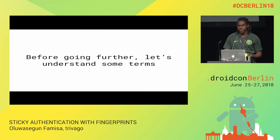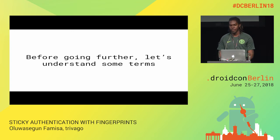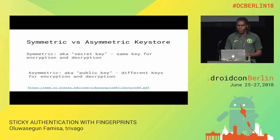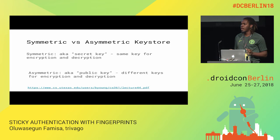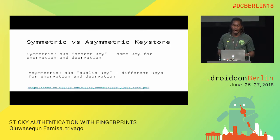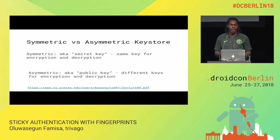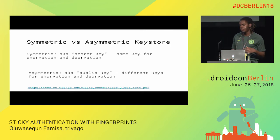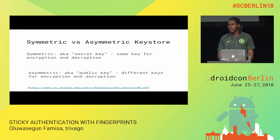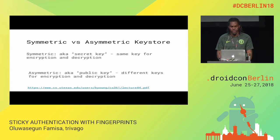Before we go further, let me quickly run through some concepts. First is the concept of keys and key stores — there are symmetric and asymmetric ones. The symmetric key, loosely speaking, is like a secret key — the same key you use for encryption is the same one you use for decryption. The asymmetric key, on the other hand, means there is a pair of keys — a public one and a private one — and both of them solve different problems. The asymmetric keys try to solve the problem of distribution: you don't want to distribute your private key to everybody.